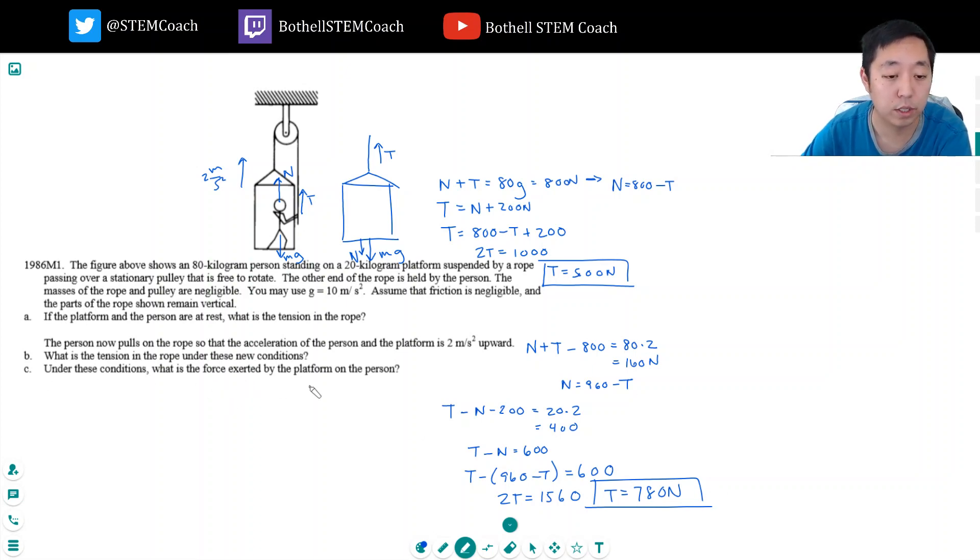Under these conditions, what is the force exerted by the platform on the person? In other words, what is the normal force? The normal force is 960 minus T, which is equal to 960 minus 780, which is equal to 180 newtons.